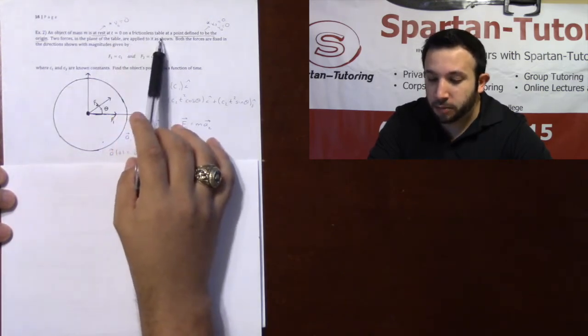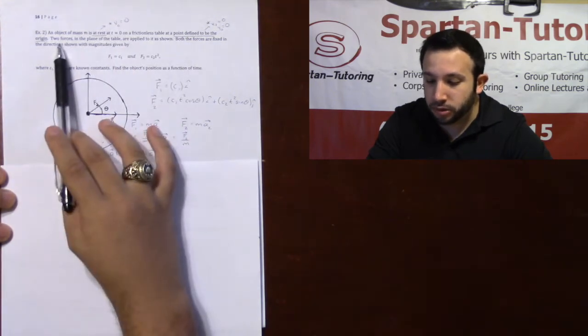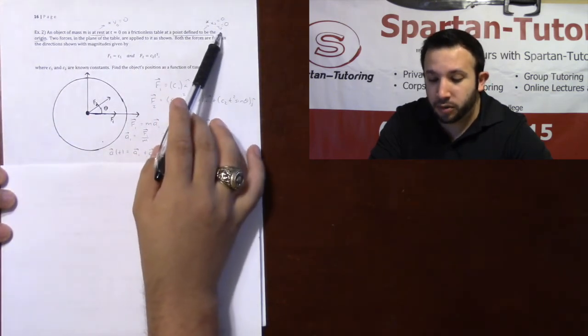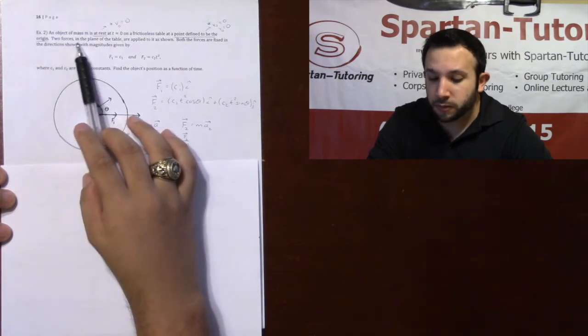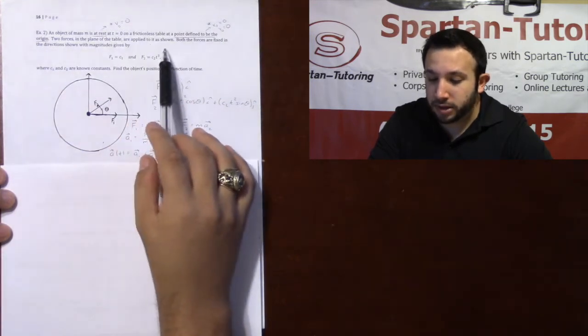On a frictionless table at a point defined to be the origin, so that's going to be when your x-naught and your y-naught is equal to zero. Two forces in the plane of the table are applied as shown.